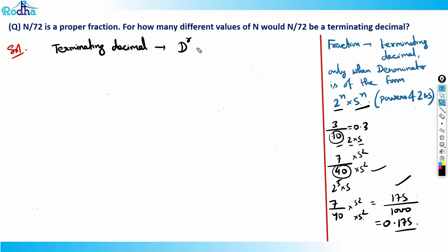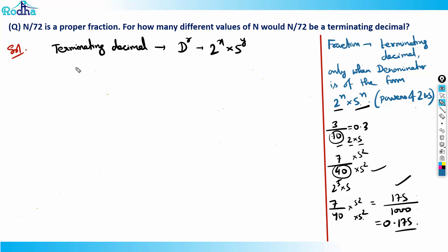The conclusion is: for a terminating decimal, the denominator must be of the form 2^x × 5^y — x and y can be different, but the denominator should only contain powers of 2 and 5. Now, 72 = 2³ × 3², so n must cancel the 3² factor.